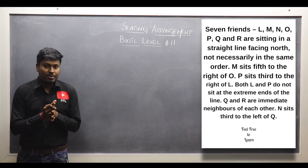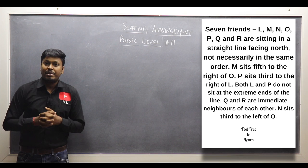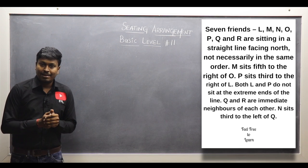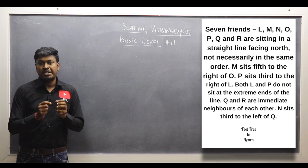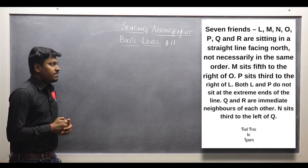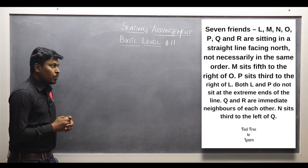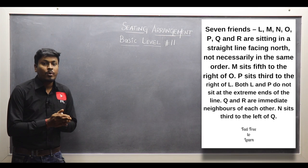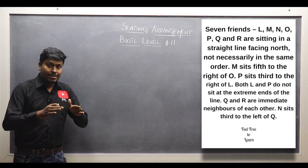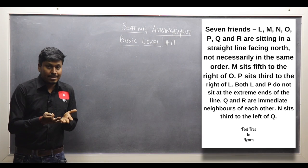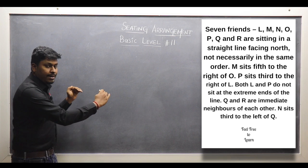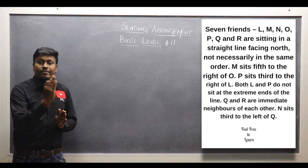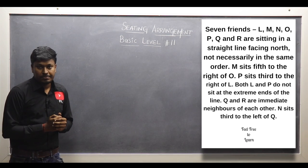First of all, thanks for being here on my YouTube channel. Now let me move on to basic level arrangement number 11. So 7 friends L to R are sitting in a straight line and all of them are facing north. Remember that they are not sitting in a circle — they are sitting in a straight line and all 7 persons are facing north.